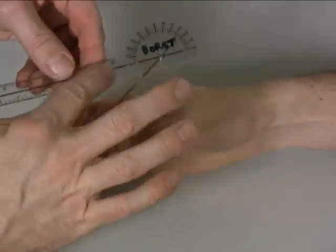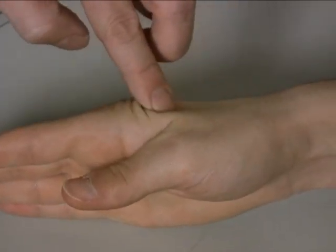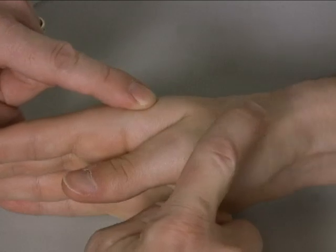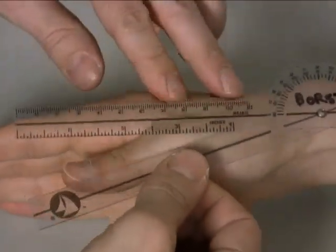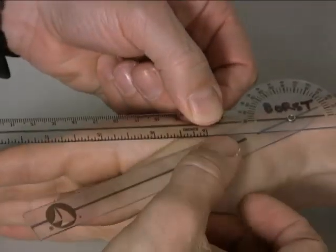The stationary arm is lined up with the index finger metacarpal, so I'll go ahead and palpate that. The moving arm is lined up with the thumb metacarpal. Once you have both of those palpated, simply line up those arms on those bones.